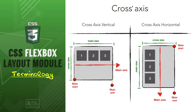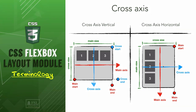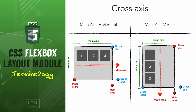Now let's move to the cross axis, which is always perpendicular to the main axis, and it is used mainly to extend items in the cross dimension. So if the main axis is horizontal, the cross axis will be vertical, and it will also have a start and an end. And if the main axis is vertical, the cross start will be at the left and the cross end at the right.